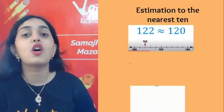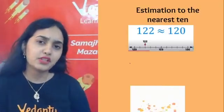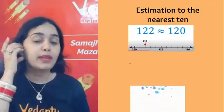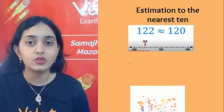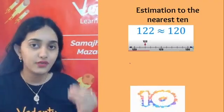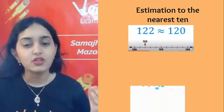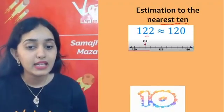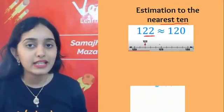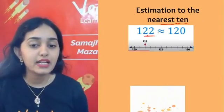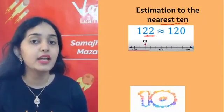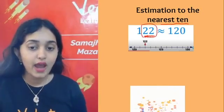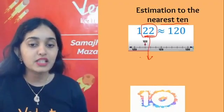Next is estimation of numbers. Why do we estimate? We estimate to get the nearest value to make our calculations easier. For estimation to nearest 10, we look at the tens and units digits. For example, to round 22 to the nearest 10, we check which two tens it lies between. 22 lies between 20 and 30 — so we check whether 22 is closer to 20 or 30.